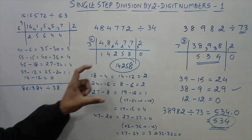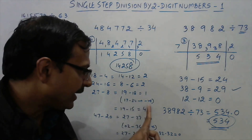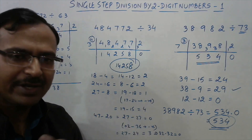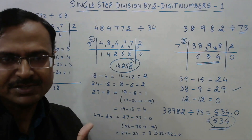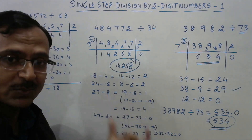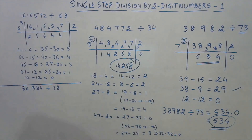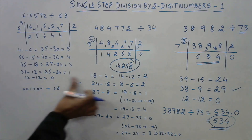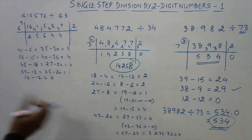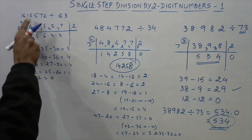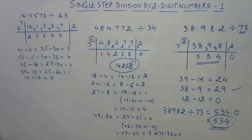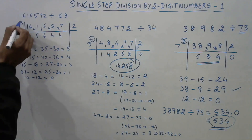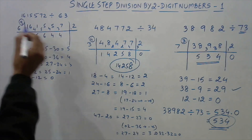Again, some different steps are involved here — like avoiding a negative dividend — and you need to practice this concept very well. About 2 to 3 hours of practice are required to master this. Let's see one more, comparatively easier example: 1615572 divided by 63.